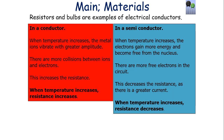To compare and contrast the two: in a conductor, when temperature increases, the metal ions vibrate with greater amplitude, so there are more collisions between ions and electrons, increasing the resistance — temperature increases, resistance increases. But in a semiconductor, when temperature increases, the electrons gain more energy and become free from the nucleus, so there are more free electrons in the circuit, which decreases the resistance because there's a greater current. In a semiconductor, when temperature increases, resistance decreases.